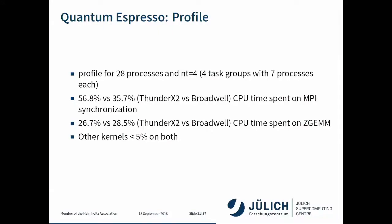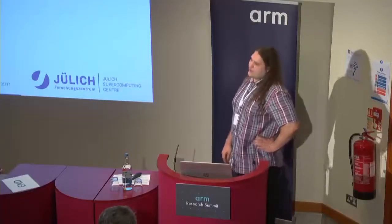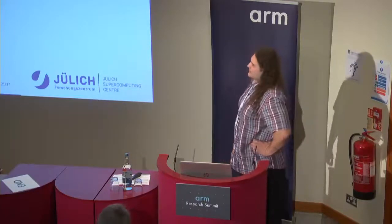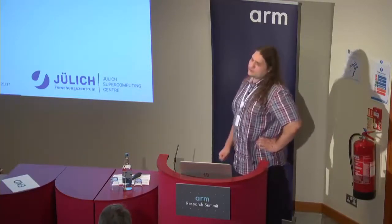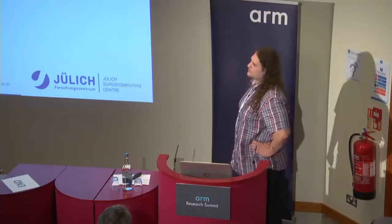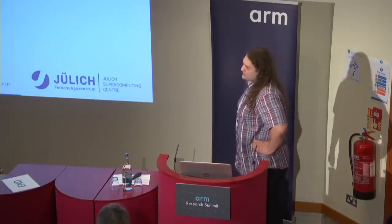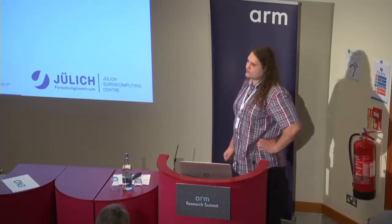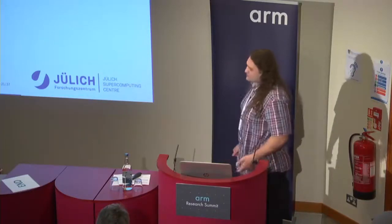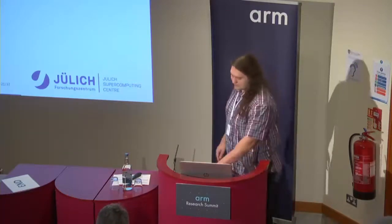The profile shown is for 28 processors. Although almost the same relative amount of time is spent on ZGEMM, the ThunderX2 node spends a lot of time on MPI synchronization. This can be explained because the ThunderX2 processor I have been using is a pre-production A2 chip and it has known inter-node communication performance issues, so this is most likely the case here.